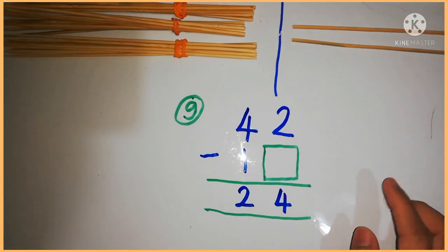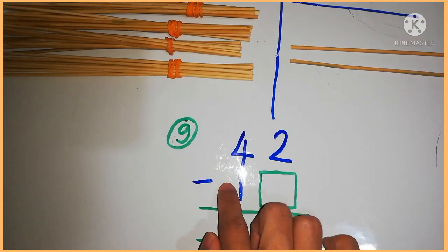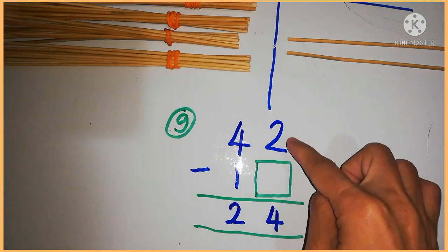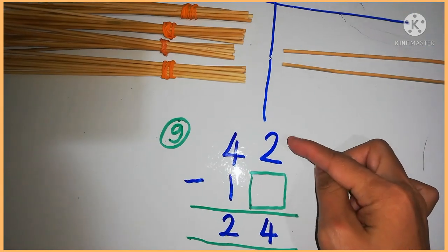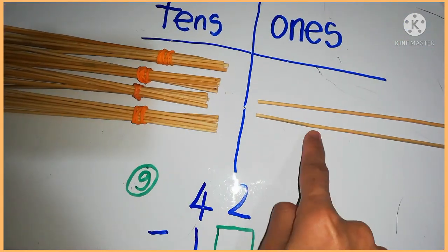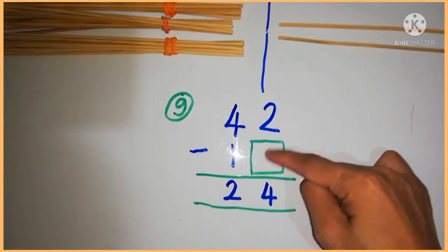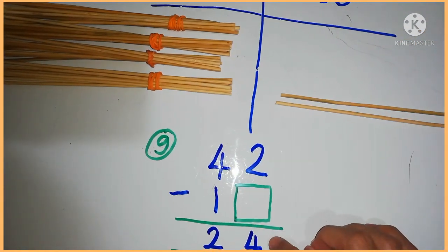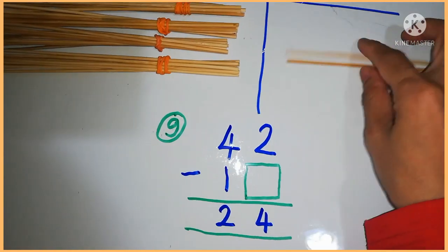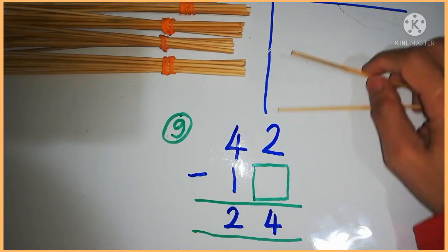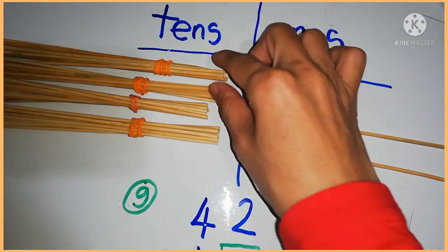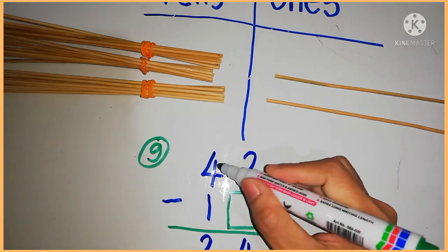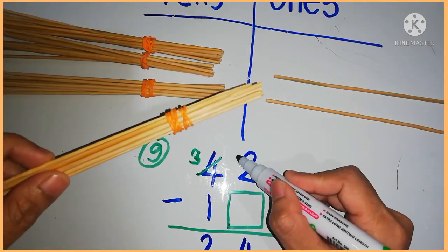The next question: 42 minus what number equals 24? How do we find the missing number? We have 42. We look at the ones: the answer has 4 in the ones place, so we need to minus 4 to get 4. But we don't have enough sticks to minus 4, so we have to take from a ten. That leaves 3 tens here, so we write 1 in the ones.